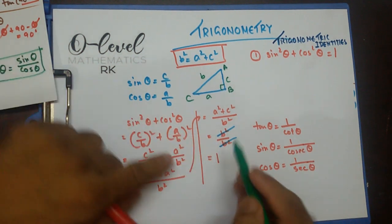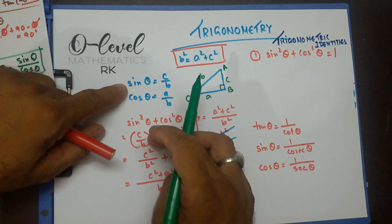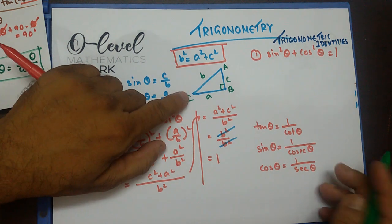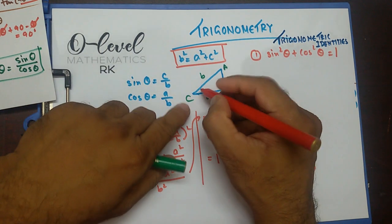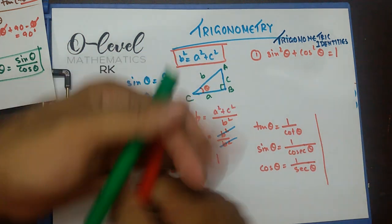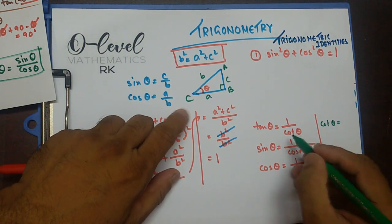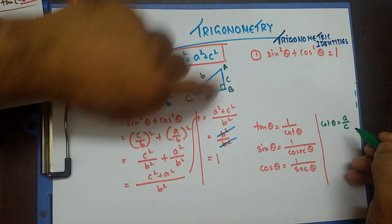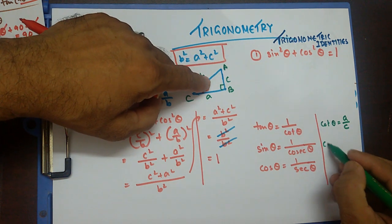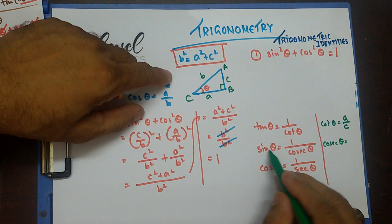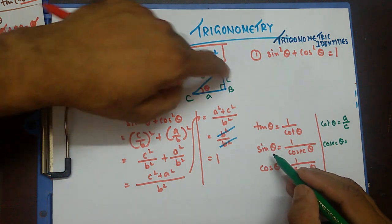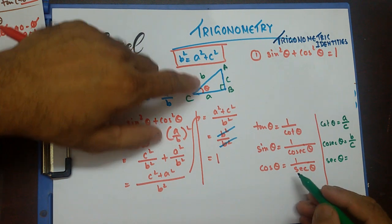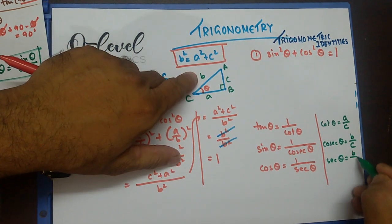So we call them sin, cos, tan, and these ones are cot, cosec, and sec — another three trigonometric ratios. If this angle is theta, then cot theta — tan theta was c by a, so cot theta would be a by c, its reciprocal. Cosec theta is the reciprocal of sine — sine was c by b, so cosec theta is b by c. And sec theta is the reciprocal of cos — cos was a by b, so sec theta is b by a.